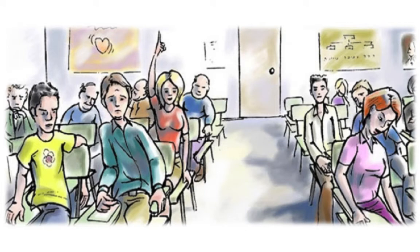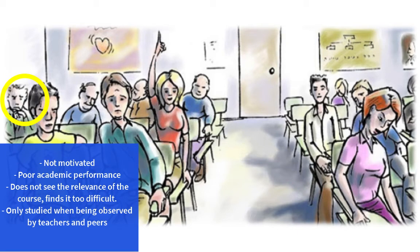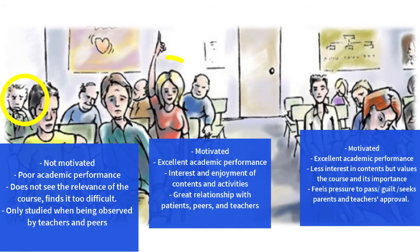Finally, we have a third student in the back, looking a bit worried. This student had poor academic performance and will probably fail the course. He tells us he never felt motivated toward the course, didn't understand its purpose or how it was going to contribute to his professional development, and says that the few times he was motivated and engaged were when being observed by his teachers or fellow students. So the main point of this example is that different students have different motivations and reasons to engage beyond simply exhibiting high or low motivation or academic performance.